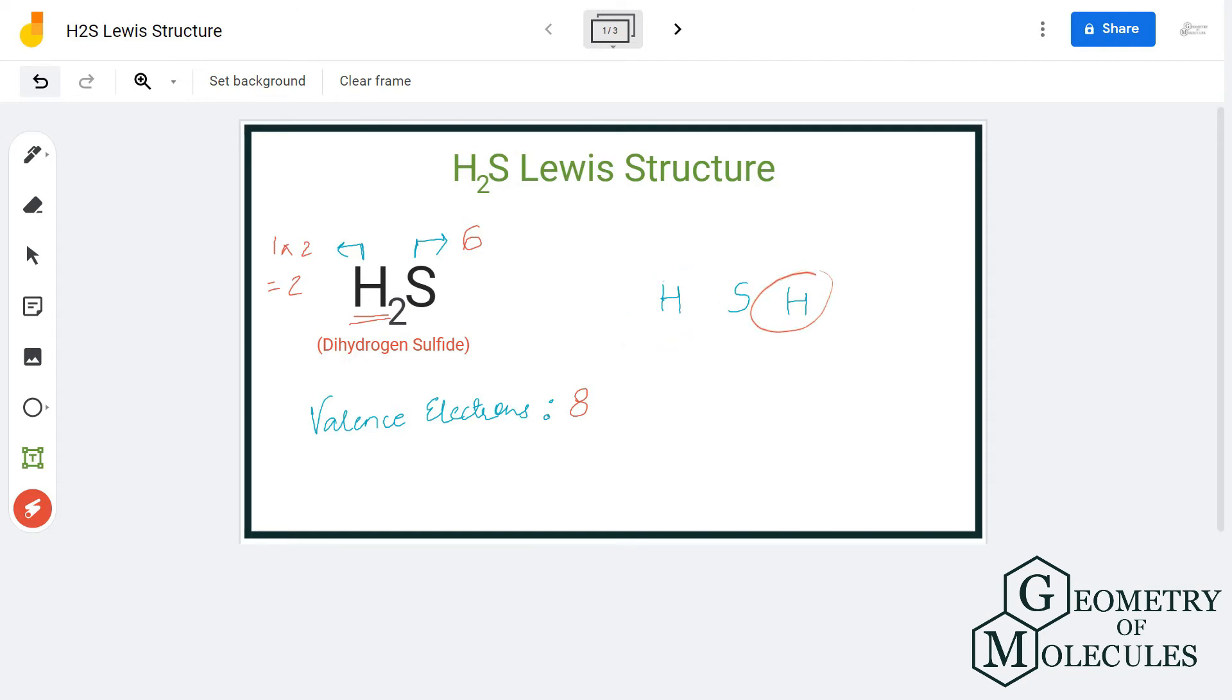Once you have done that, start placing all the valence electrons of the atoms. Hydrogen needs two valence electrons to complete its octet and it will share one electron of sulfur to do that. So we have two electrons between S and H on both the sides. So here we have used four valence electrons out of eight.